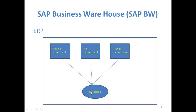With ERP, all departments access a single centralized database. Finance data goes to the finance department, HR data goes to HR, and travel data goes to the travel department — each receiving the data they need. All department data is stored in a single database and extracted per department as required. Cost is reduced because there is only one database to maintain, and data duplication is eliminated. This made a revolution and helped SAP shine worldwide.